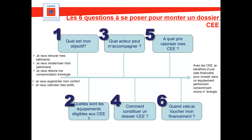Pour vous qui avez des projets pour votre collectivité, soit sur votre patrimoine, soit pour des programmes d'action, voici comment procéder étape par étape. D'abord définir son objectif : rénover ses bâtiments, réduire la consommation d'énergie, augmenter le confort ou valoriser ses actifs. Ensuite, identifier les équipements éligibles aux C2E en parcourant le catalogue, quels acteurs peuvent vous accompagner, comment constituer un dossier C2E, à quel prix, et quand est-ce que vous allez toucher votre financement.